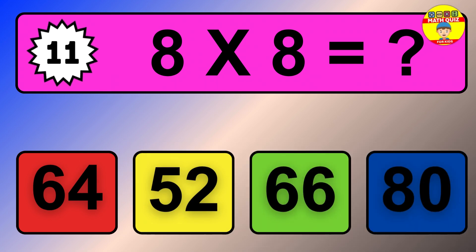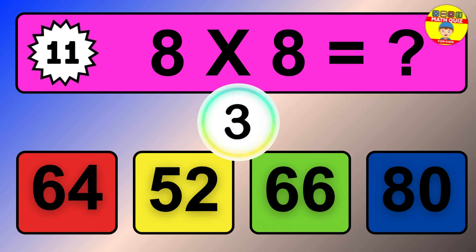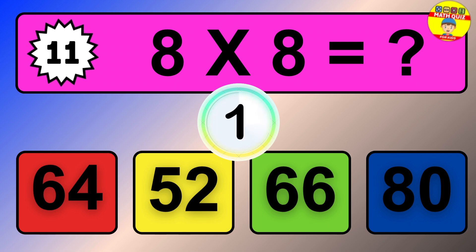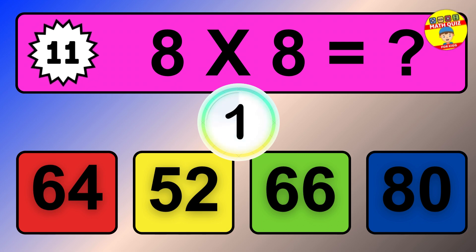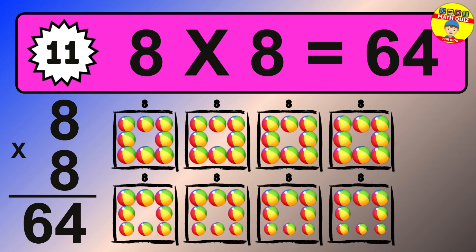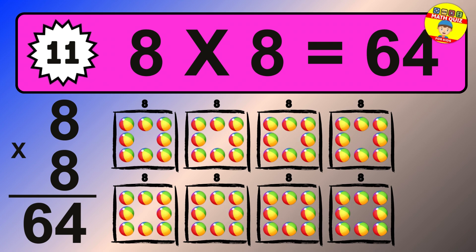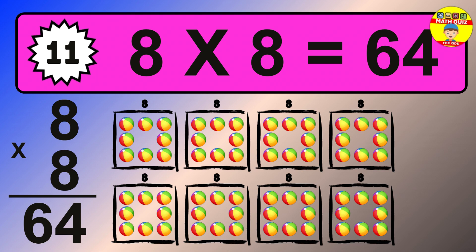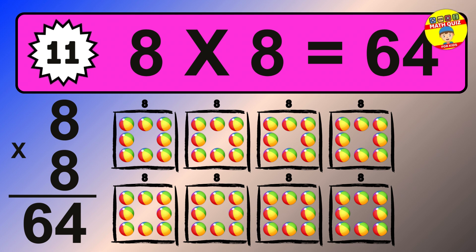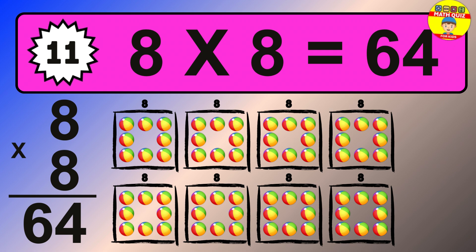Question 11. 8 times 8 equals what? The answer is 8 times 8 is 64. To calculate, we have 8 groups with 8 balls each one. So how many balls do we have? 64 balls.